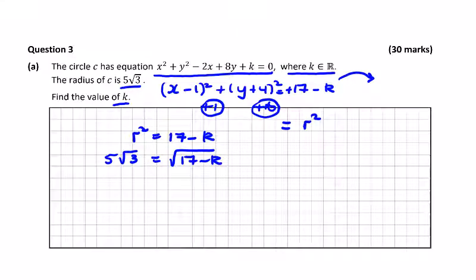So square both sides, we get 25 times 3, we're going to get 75, equals 17 minus k. And there would be two possible answers here, we'll just take one here, we'll just take the 17 minus k, just keep it simple.